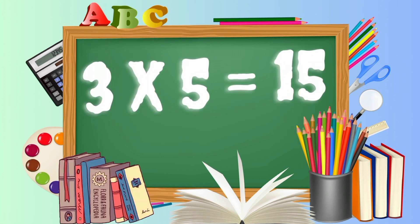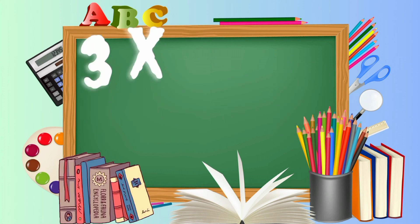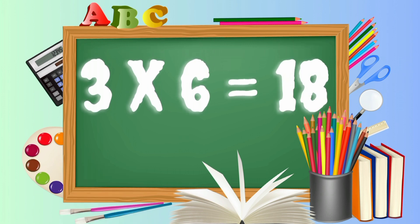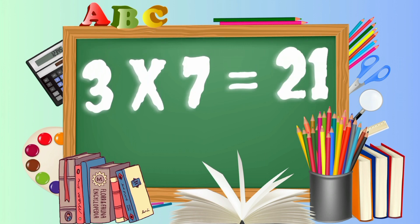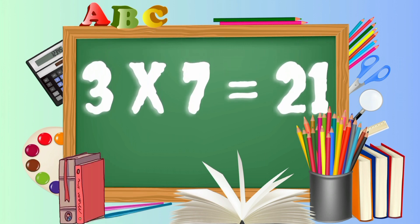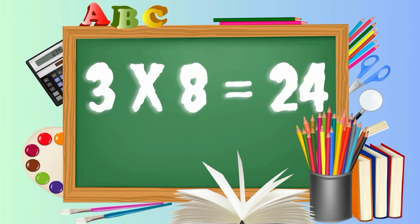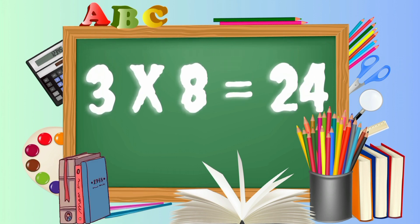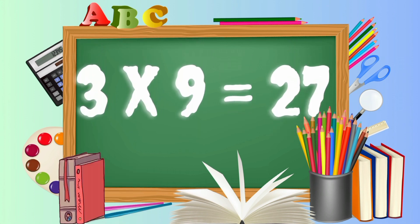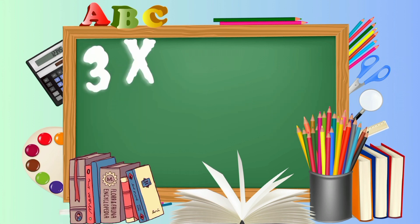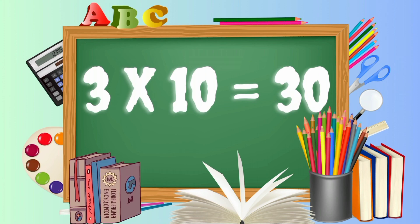3, 5's a 15. 3, 5's a 15. 3, 6's a 18. 3, 6's a 18. 3, 7's a 21. 3, 7's a 21. 3, 8's a 24. 3, 8's a 24. 3, 9's a 27. 3, 9's a 27. 3, 10's a 30. 3, 10's a 30.